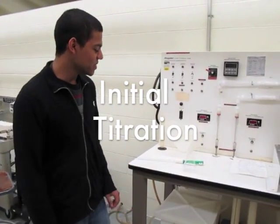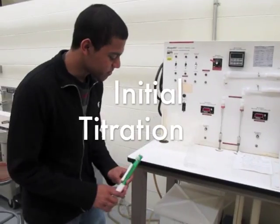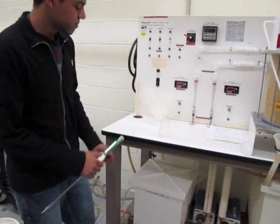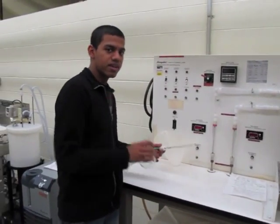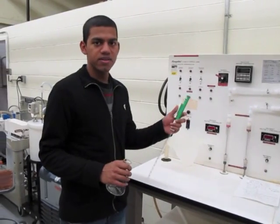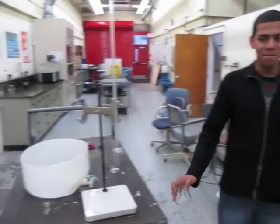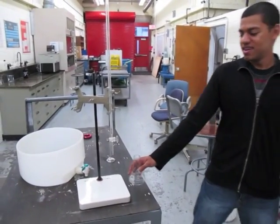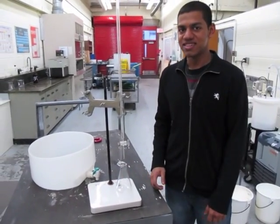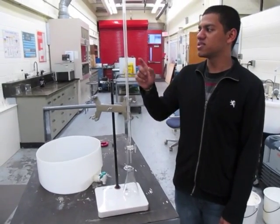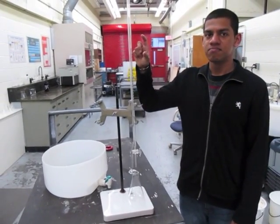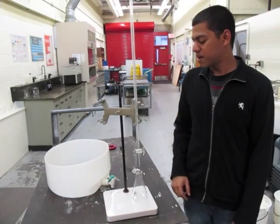For the initial titration, you want to take five milliliter samples from each of the tanks. First add NaOH to the HCl, and then followed by the isopropyl acetate. Then you want to add the indicator and titrate, recording the initial value and the value after titration.